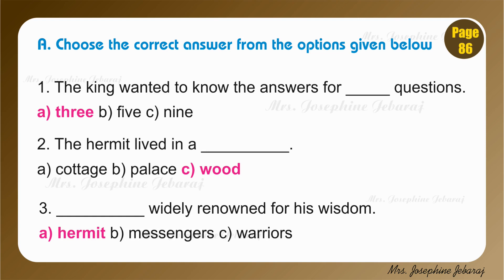Number 3. Blank was widely renowned for his wisdom. The options are: hermit, messengers, or warriors. We learned in the lesson that the hermit is widely known for his wisdom. That's why the king went to meet the hermit in the forest. So the answer is hermit.